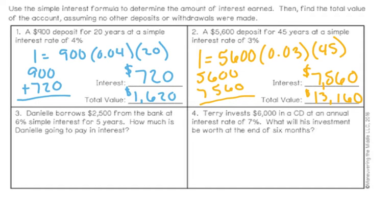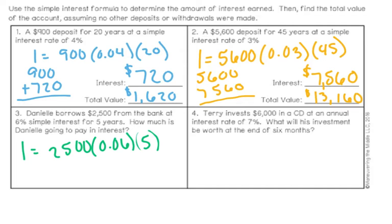Question 3 says Danielle borrows $2,500 from the bank at 6% simple interest for 5 years. How much is Danielle going to pay in interest? So far we've looked at problems where we earn interest, but you can also need to pay interest — this happens when you buy a house or a car. Regardless of whether we're earning or paying the interest, we can use the same simple interest formula. The principal is $2,500, multiplied by the rate as a decimal, multiplied by the years. She's going to have to pay $750 in interest.